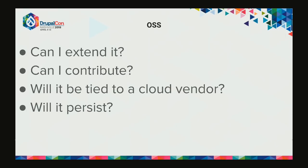Open sourciness: you want your local dev environment to be open source so you can extend it, contribute to it, fix bugs you need solved, and not be tied to a cloud vendor. If you're an agency working across all three clouds, it needs to work with all of them. Proprietary local dev software may not release versions frequently, may miss PHP versions, and may just disappear. Open sourciness is really important.